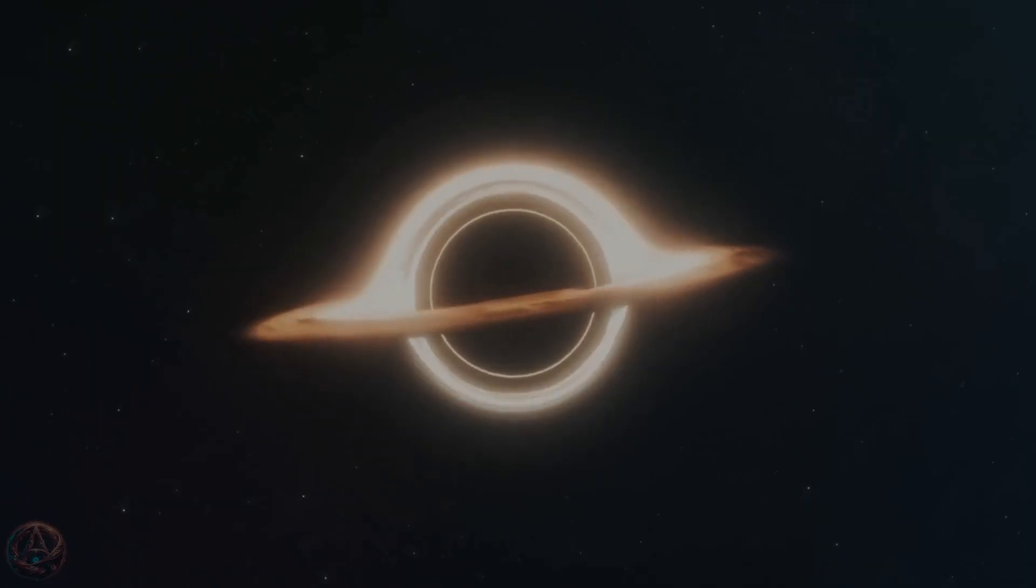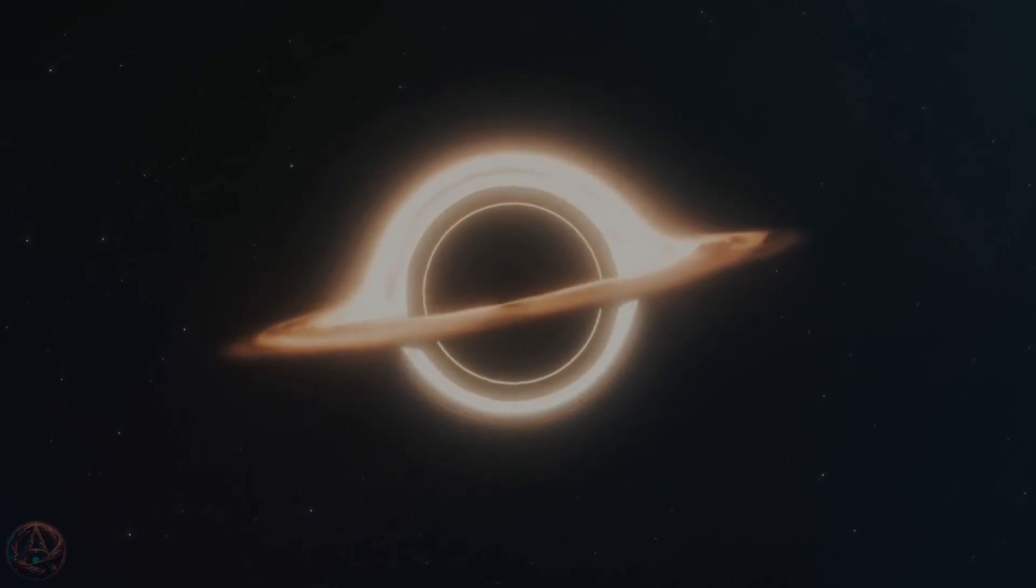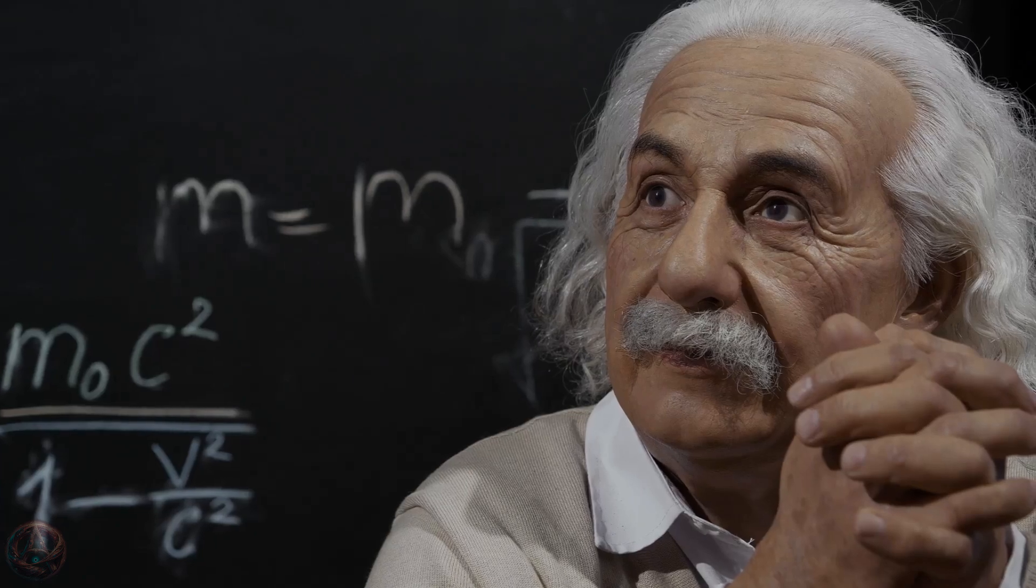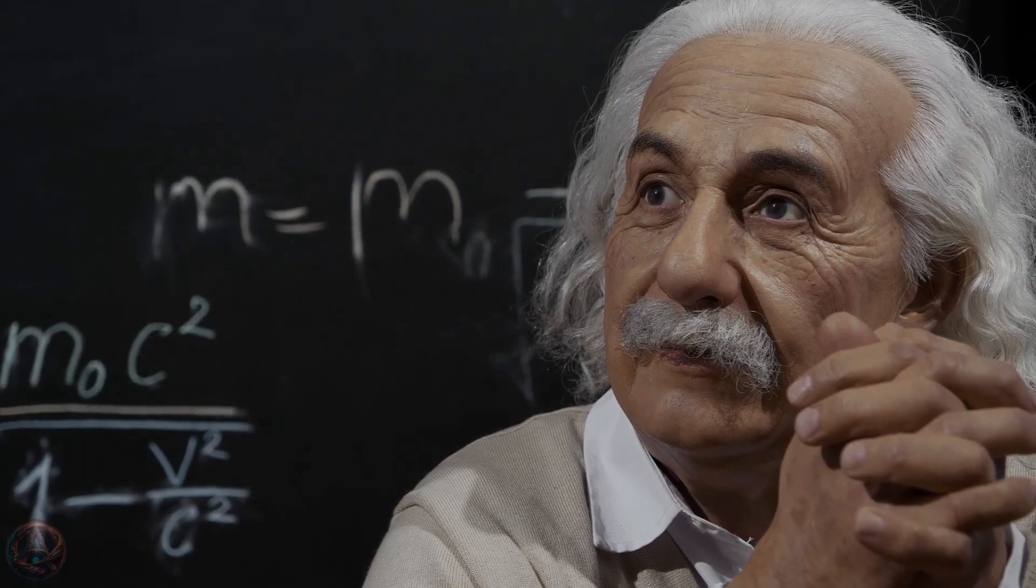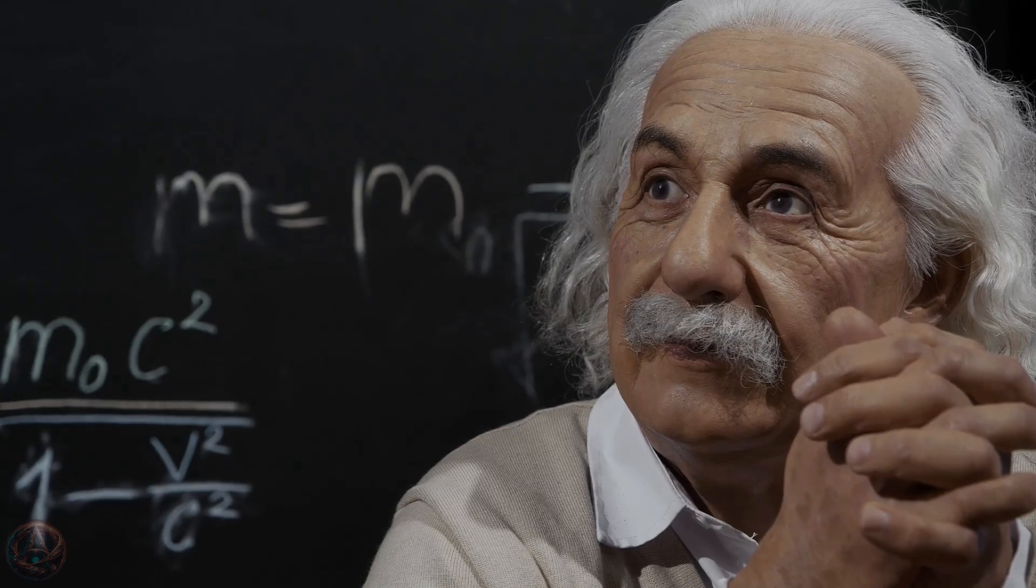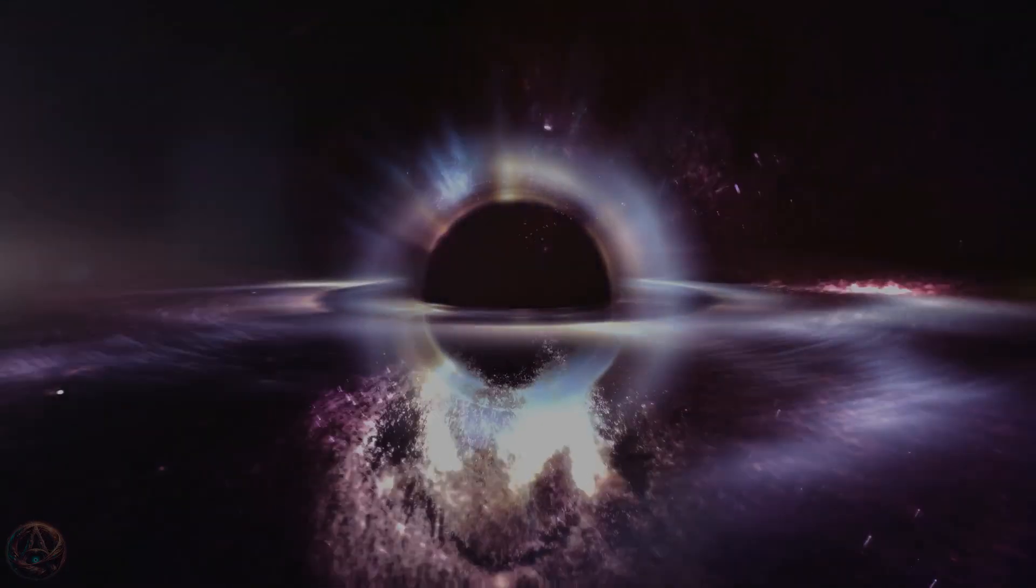To understand why this idea is so groundbreaking, we need to go back to the first time we ever theorized that black holes could exist. It was Albert Einstein, through his theory of general relativity, who first predicted the existence of these gravitational monsters. He showed that if you concentrated enough mass into a small enough space, its gravity would become so strong that nothing, not even light, could escape. But Einstein himself didn't believe black holes could actually form.